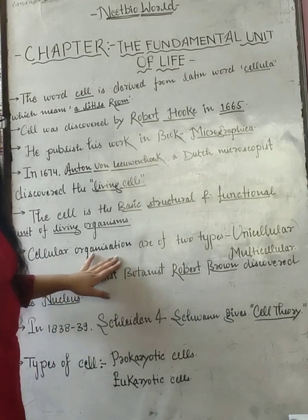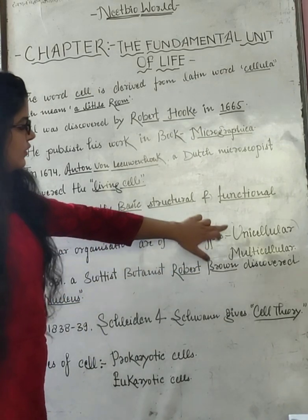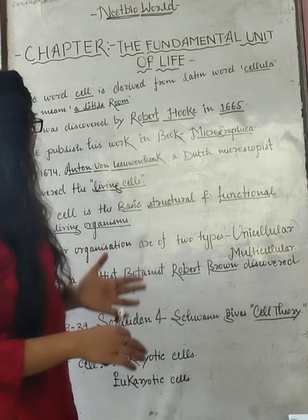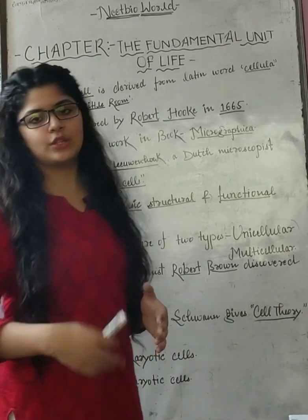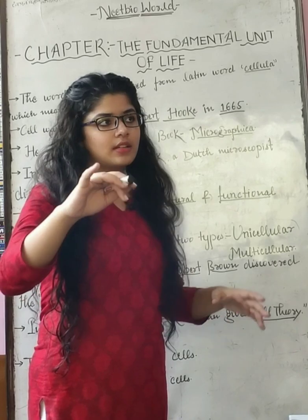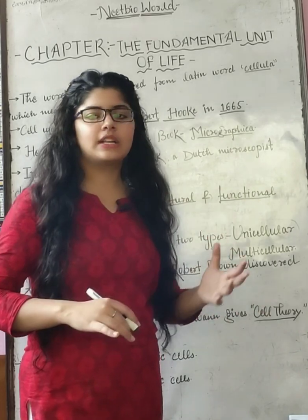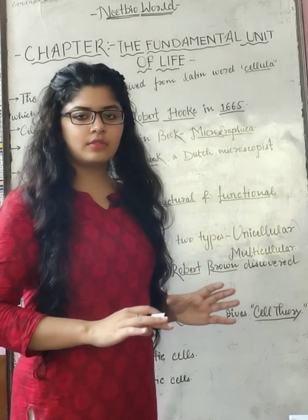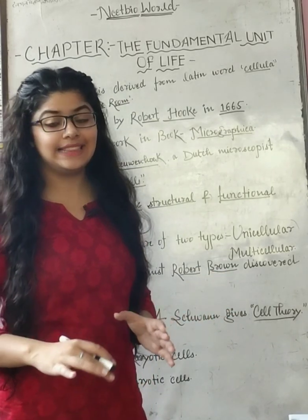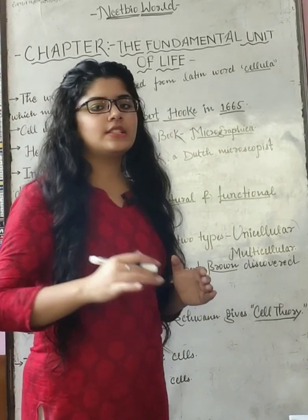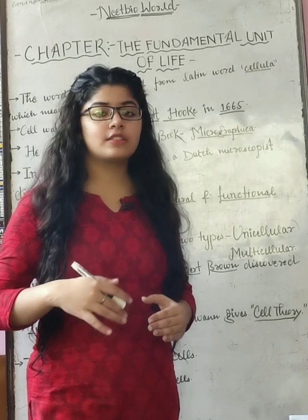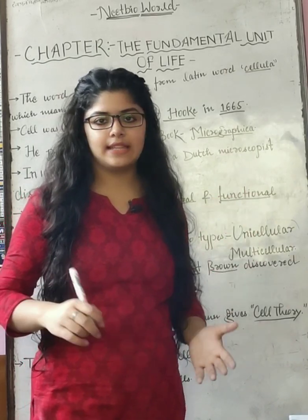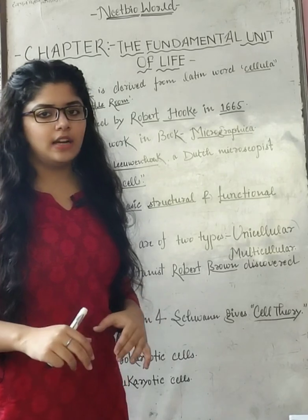Cellular organizations are of two types: unicellular and multicellular. When an organism is made of only a single cell, then it is called a unicellular organism. And when an organism is made up of many cells, then it is called a multicellular organism.